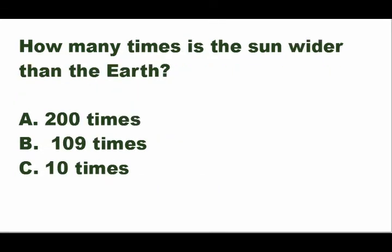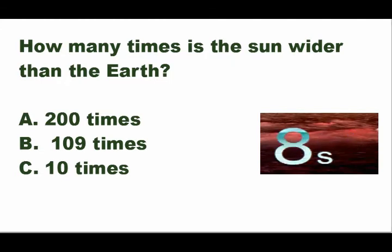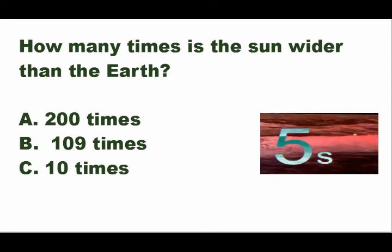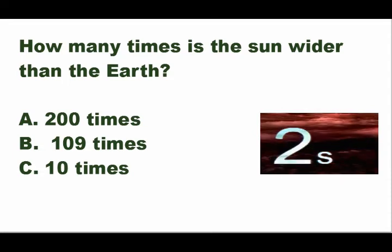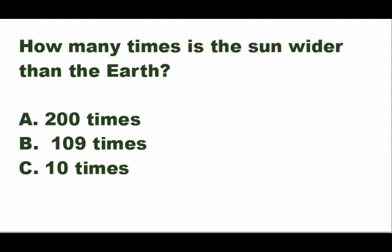Next question: how many times is the sun wider than the earth? Is it A — 200 times, B — 109 times, or C — 10 times? The answer is letter B — 109 times the sun is wider than the earth.